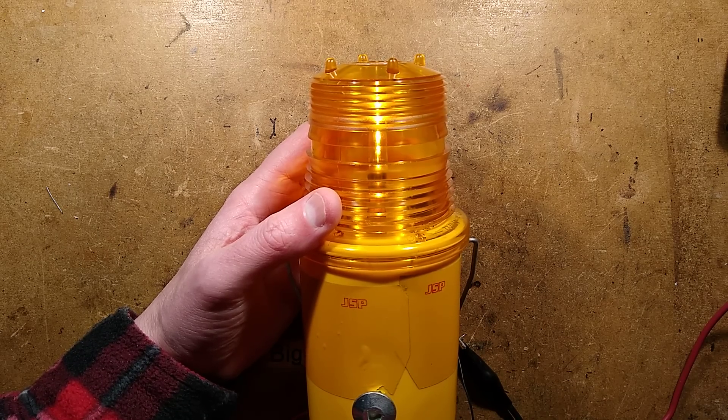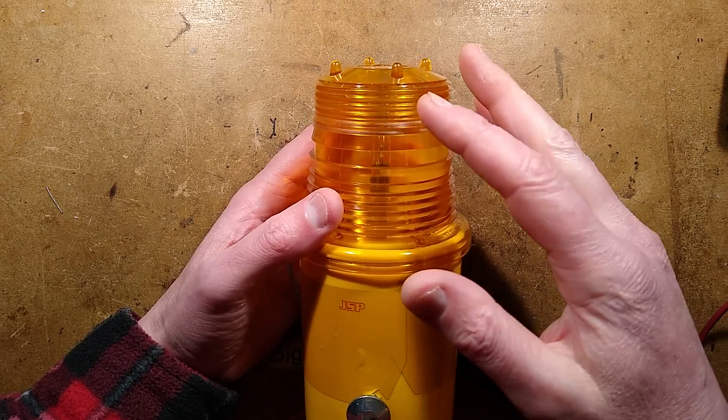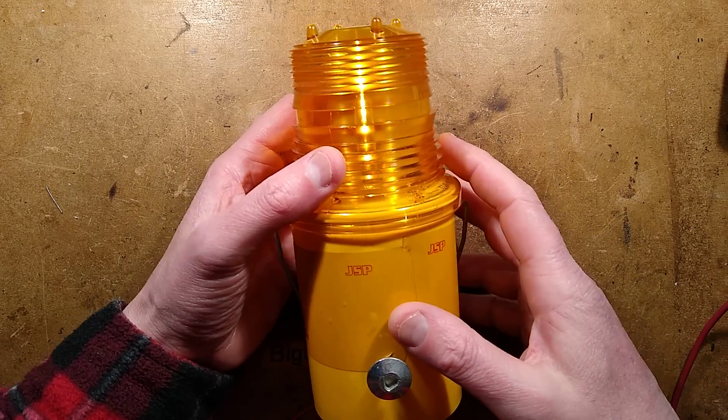Let's take a look at a traditional roadwork beacon from the past. It uses a tungsten lamp and a big square 6-volt battery.